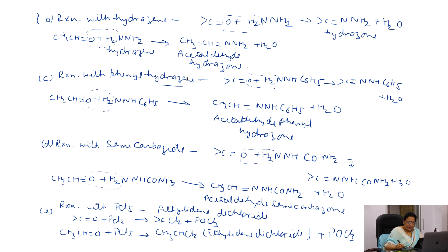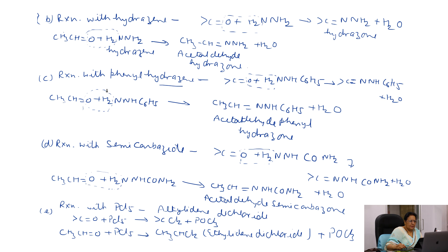The next reaction is reaction with phenylhydrazine. When one H of hydrazine is replaced by C6H5 (phenyl group), we get phenylhydrazine. When the carbonyl group reacts with phenylhydrazine, we get a phenylhydrazone. Acetaldehyde gives acetaldehyde phenylhydrazone and one water molecule is eliminated.